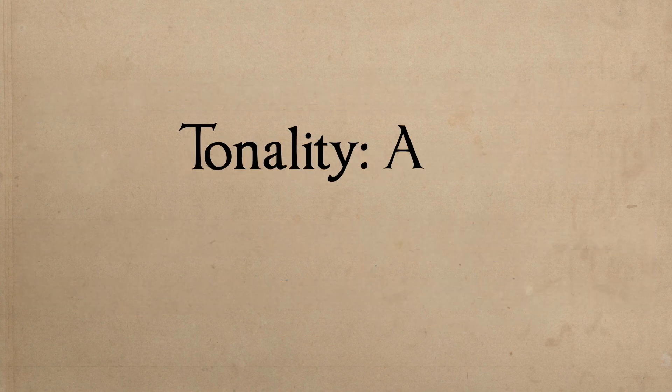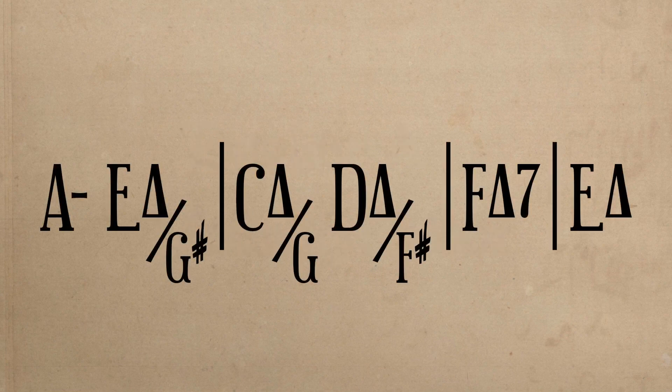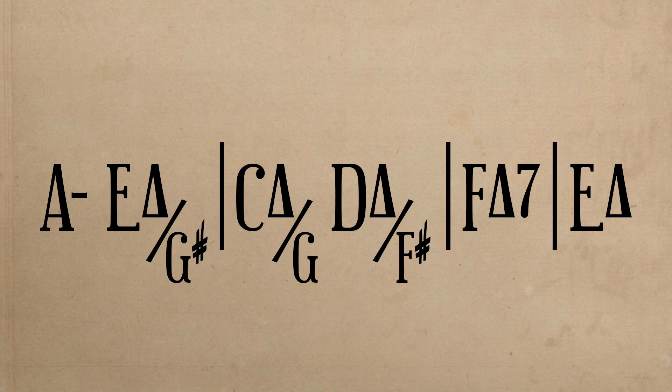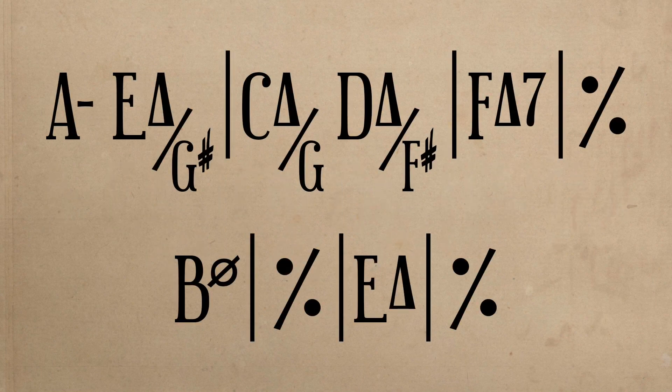The tonality of the theme is A, with its mode being minor. This, however, is not made known until the second section sounds the progression of A minor, E major over G sharp, C major over G, D major over F sharp, F major 7, and E major, followed by a variation that incorporates B half-diminished.